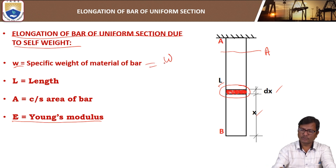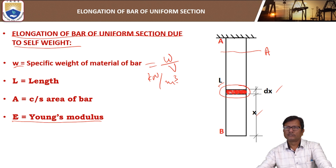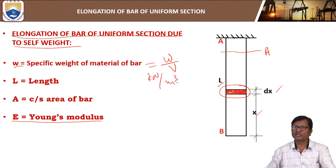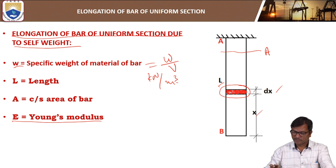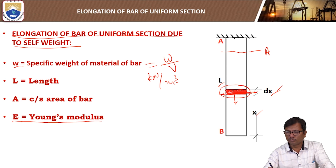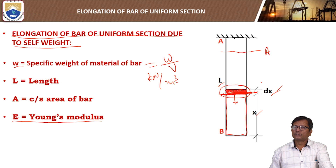Specific weight means weight per unit volume, so it has units of Newton per meter cube or kilo Newton per meter cube — units of weight divided by units of volume. The specific weight of the material is constant — it is a material property, constant for a given material. Now consider the element of thickness dx. On this element, at the bottom end of the element, the weight of the portion below the section will be acting at this section.